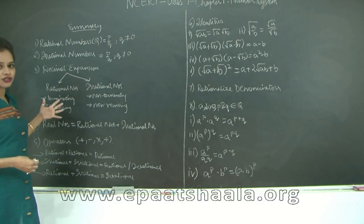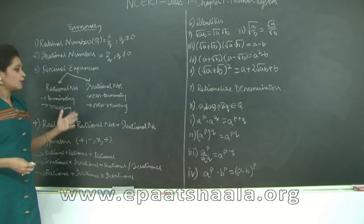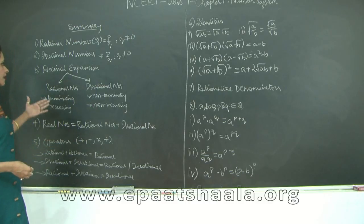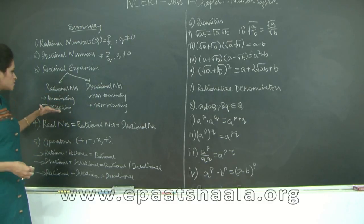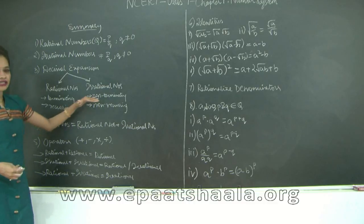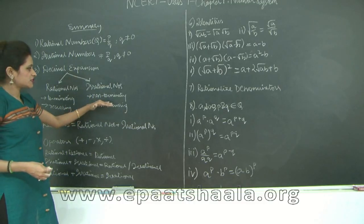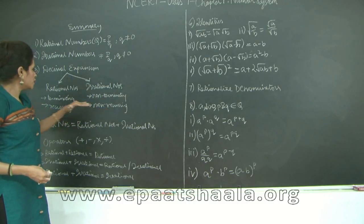The next thing we looked at was decimal expansions — the decimal expansion of rational and irrational numbers. We concluded that the decimal expansion for rational numbers would be either terminating or recurring, whereas for irrational numbers it would be non-terminating, non-recurring.